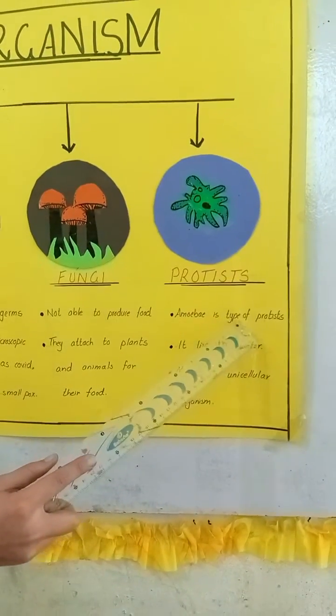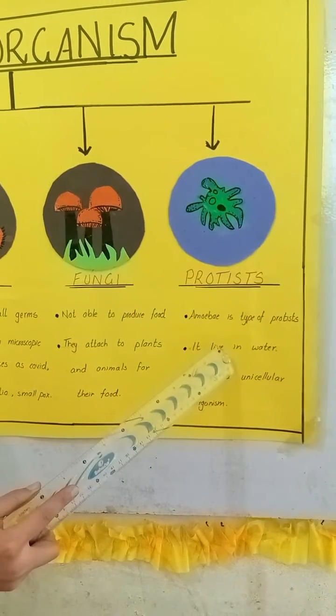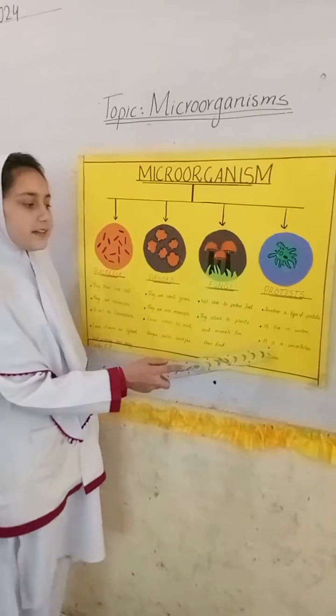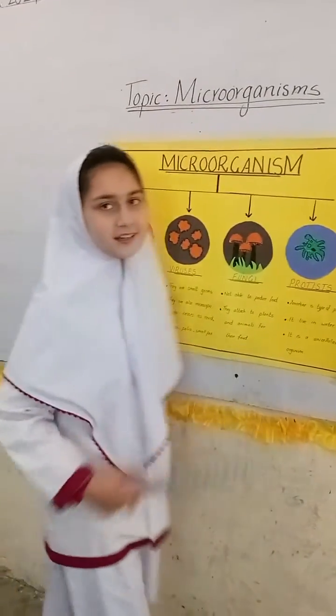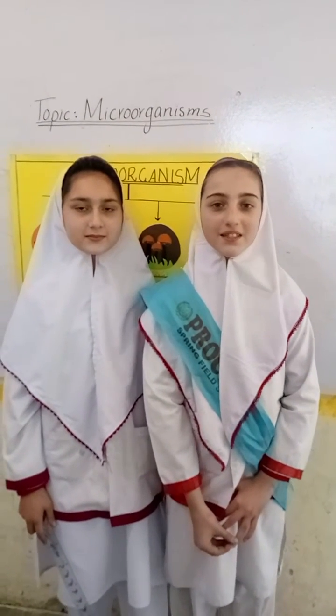Amoeba is a type of protist. It lives in water and it is a unicellular organism. Thank you, I hope you understood about the types of microorganisms.